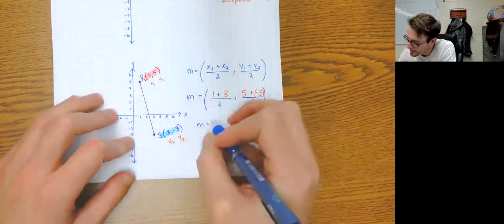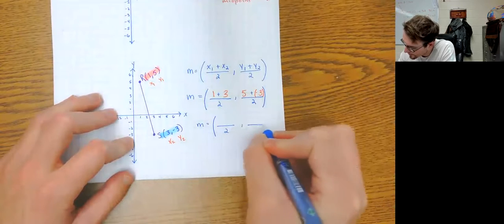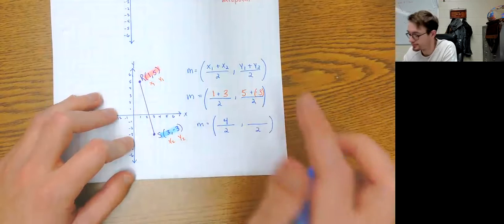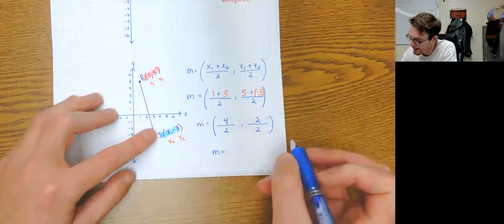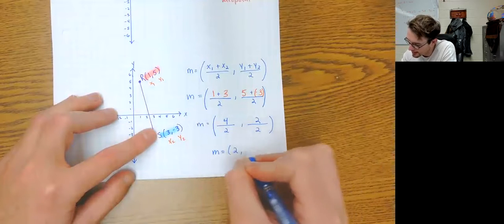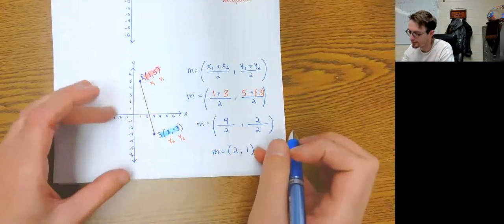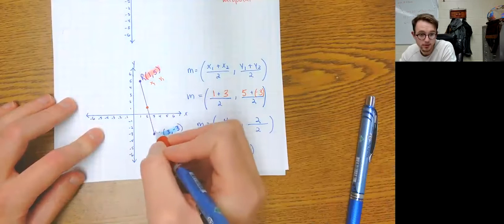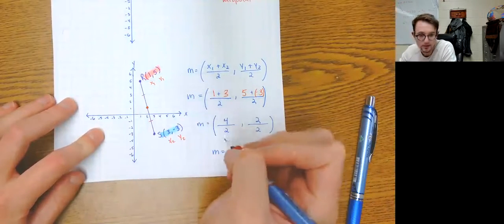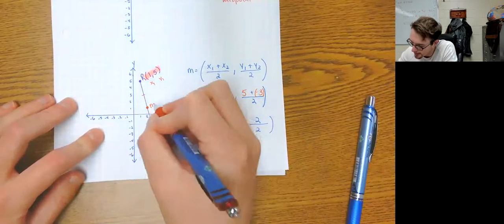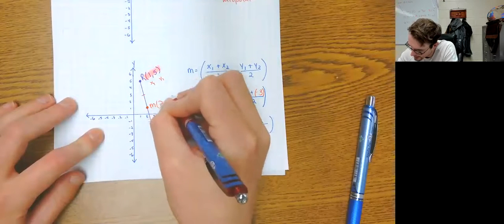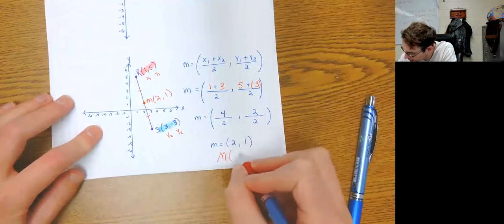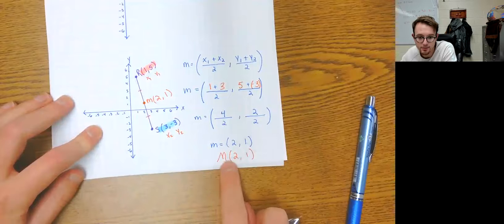M equals. Now what we're going to do is start simplifying. What is 1 plus 3? That's 4. What is 5 plus negative 3? Two. Almost done. We know what 4 divided by 2 is — that's 2. Two divided by 2 is 1. Now what I like to do is plot that point to double-check, see if it actually looks like it's in the middle. It looks to me like that's in the middle — it makes this piece and this piece congruent. So M would be (2, 1). That's the coordinates. That's how we use the midpoint formula. I would actually answer this like this because that is the point coordinate.